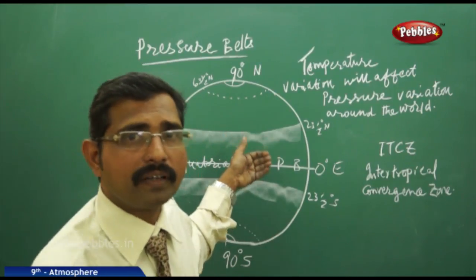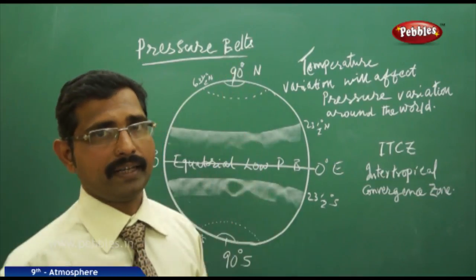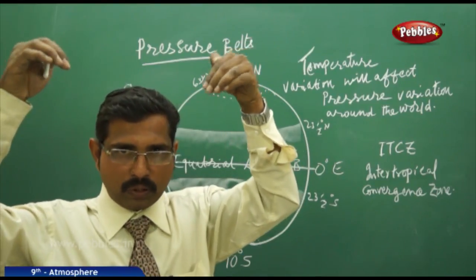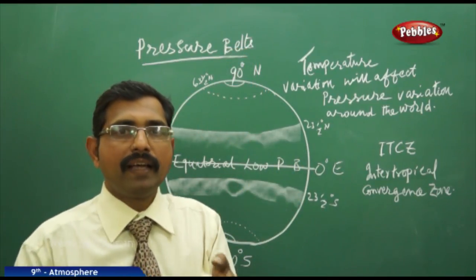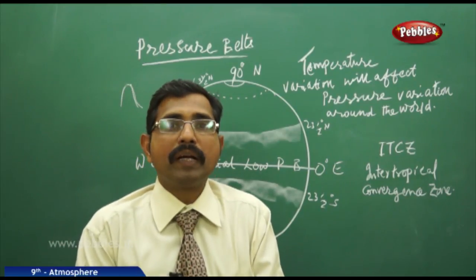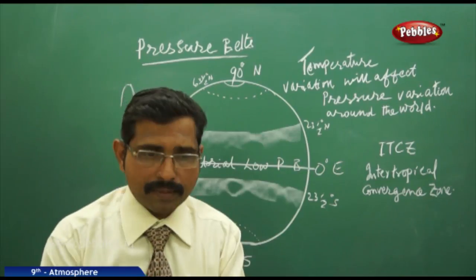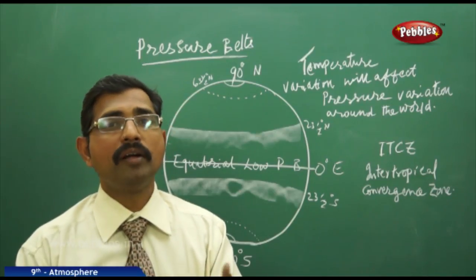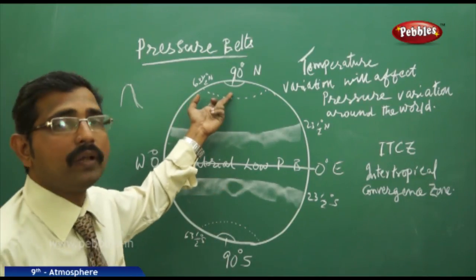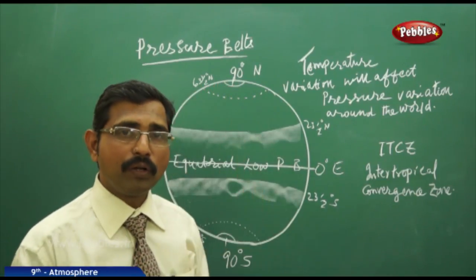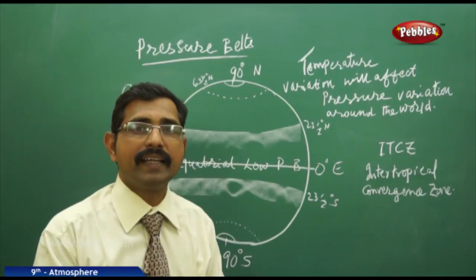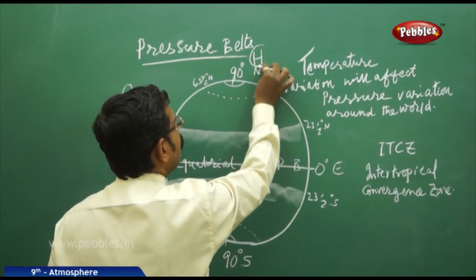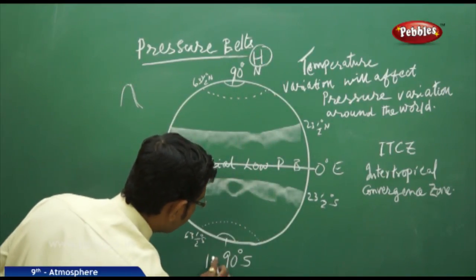Once the heat is more, the air molecules scatter and spread. But once they cool, they come closer, sink towards the earth's surface, and the molecules become dense. More molecules means more pressure. So in cooler areas and cold regions, the molecules are very dense, meaning high pressure zones. Always remember, the polar belts are high pressure belts.